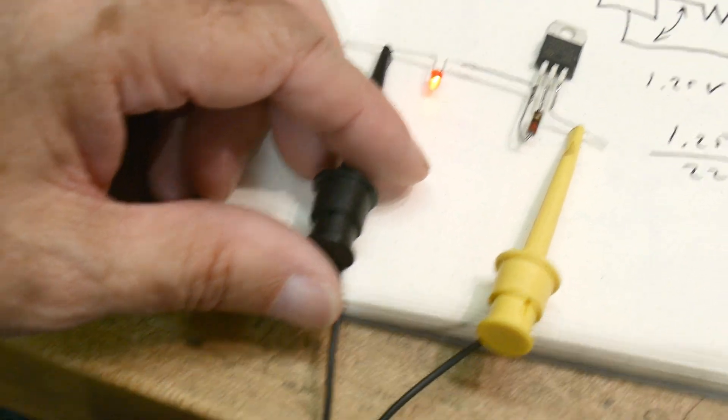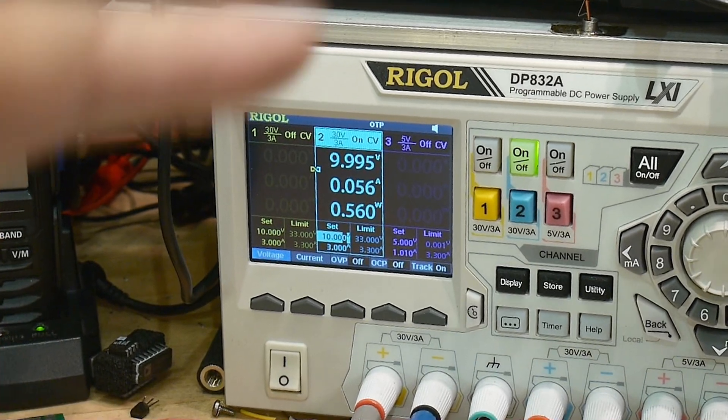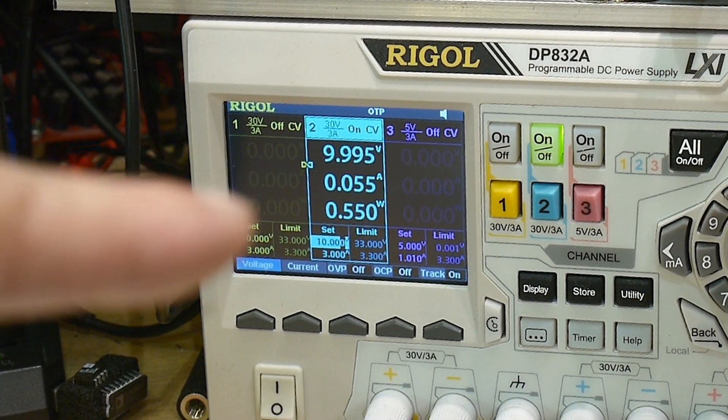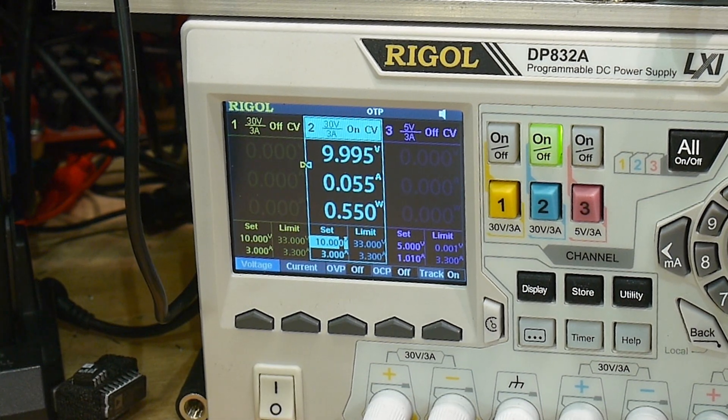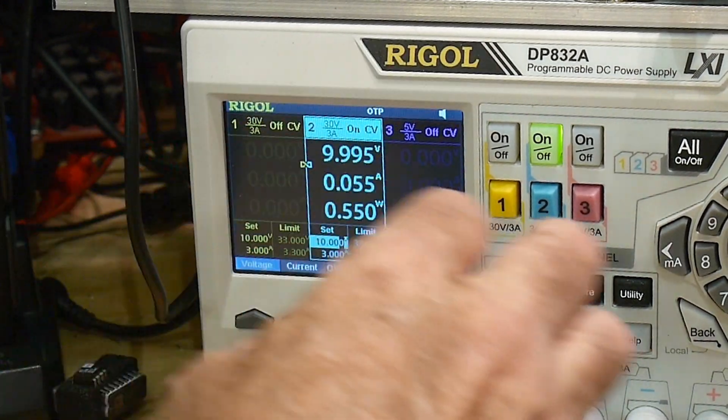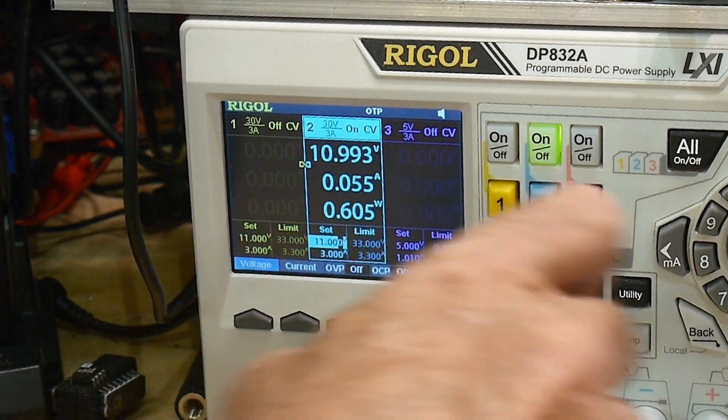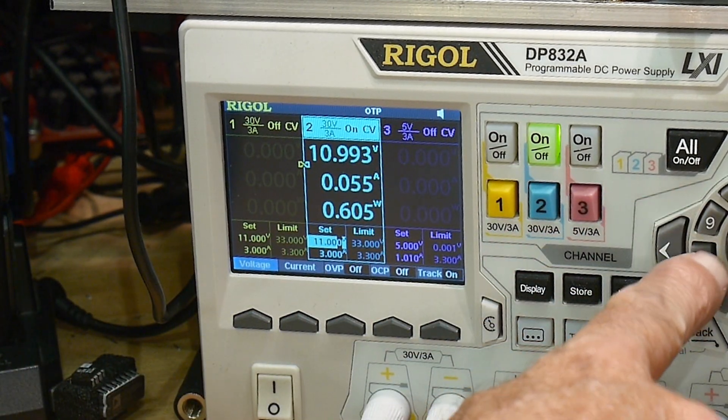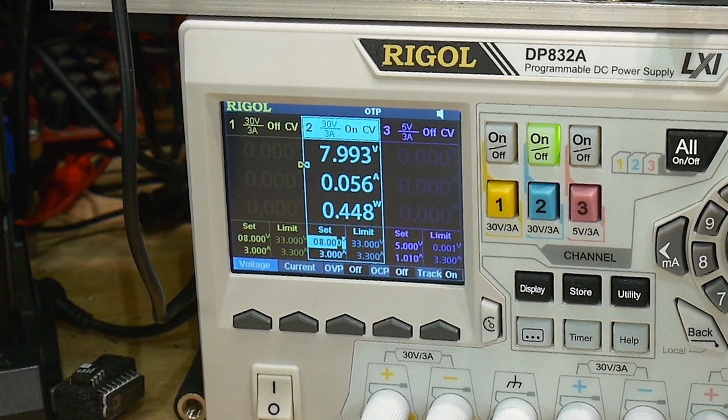And is it 56 milliamps? Well, the power supply has a current meter in it. So you can see right there it says 55 milliamps, 56 milliamps. There we go. And we're inputting 10 volts. So let's do 11 volts. That didn't change. Let's do 8 volts. That didn't change. So it's constant current.